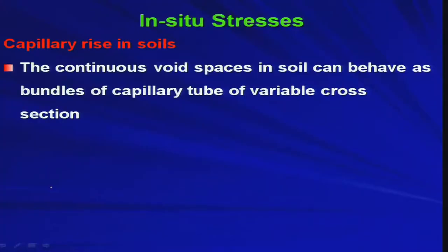The continuous void spaces in soil can behave as bundles of capillary tubes of variable cross section. The void spaces in the soil are interconnected and continuous, forming a kind of tube with different diameters. These tubes of different cross sections will try to suck or draw water into the void space on top of the water table due to capillary suction.